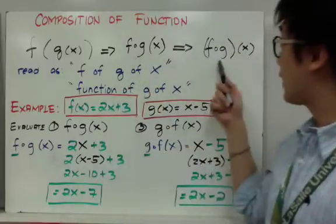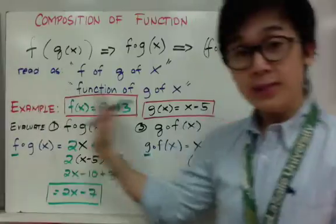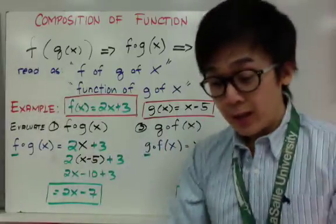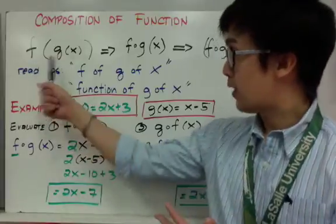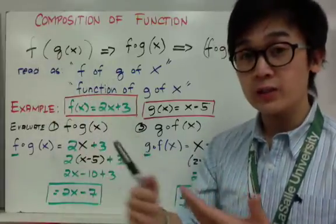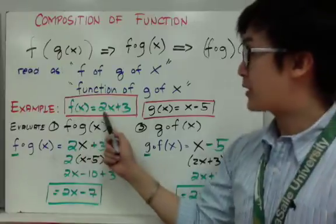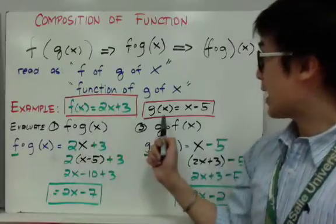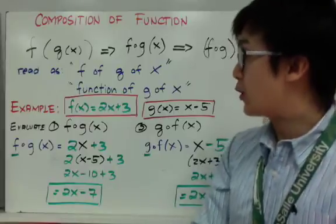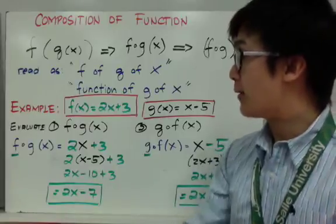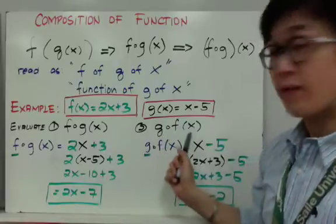They can write composition as f of g of x in either notation. In this example, I have two functions: f of x equals 2x plus 3, and g of x equals x minus 5. I'm going to evaluate f of g of x and also g of f of x.